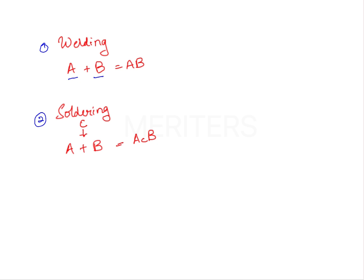But in soldering, what we do is we add a filler metal in between the two metals that have to be connected. So this filler metal, or the solder metal, bridges the gap between the two metals.